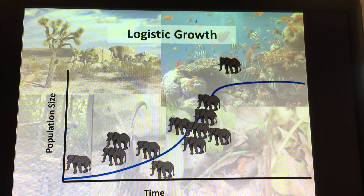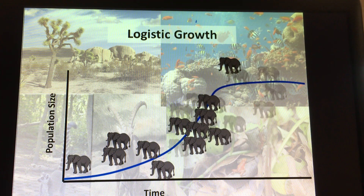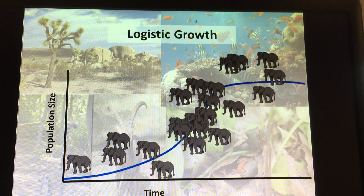Then there is more food, more space, and fewer individuals. So breeding happens, and now you have an increase in population.